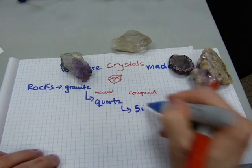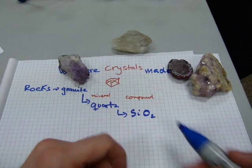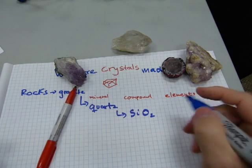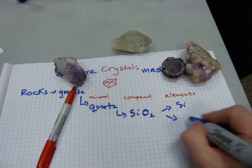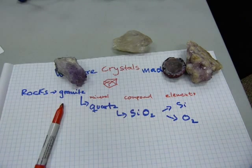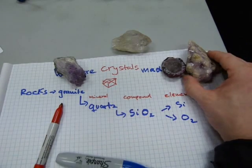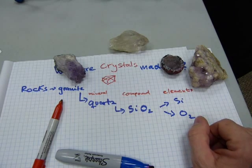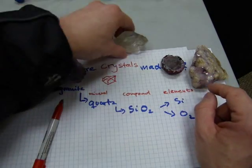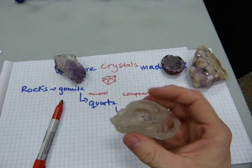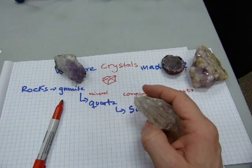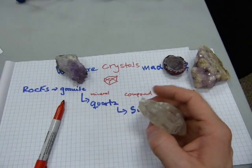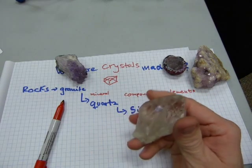Quartz is basically silicon dioxide — that's one silicon and two oxygens. These are called compounds because elements compound together; in this case silicon and oxygen combine as SiO₂. So for the material of these crystals — these are all made of silicon dioxide. This clear one is probably the purest silicon dioxide, which is also quartz. Sand is also quartz, or contains a lot of quartz, and you can make glass out of sand — which is why this quartz crystal is pretty clear.